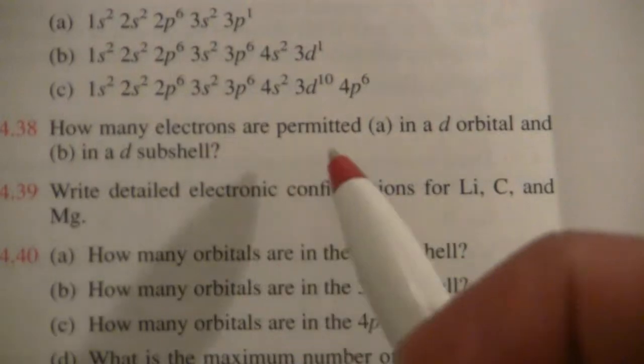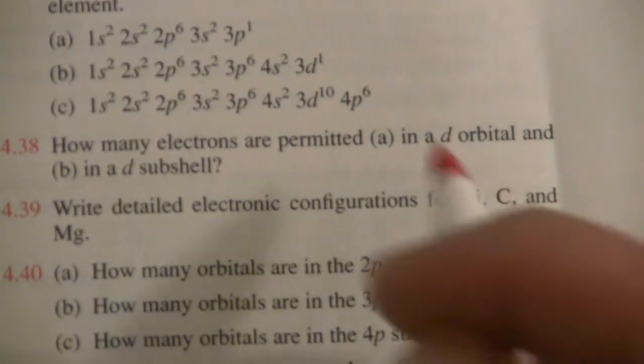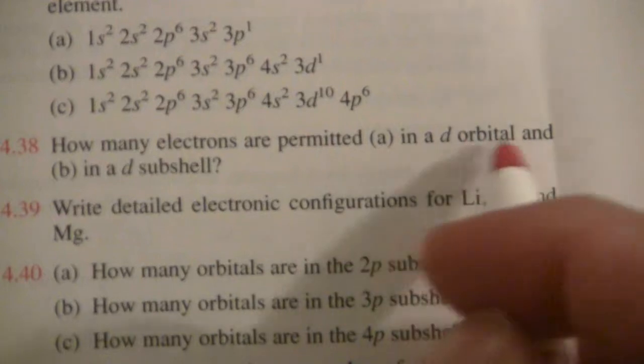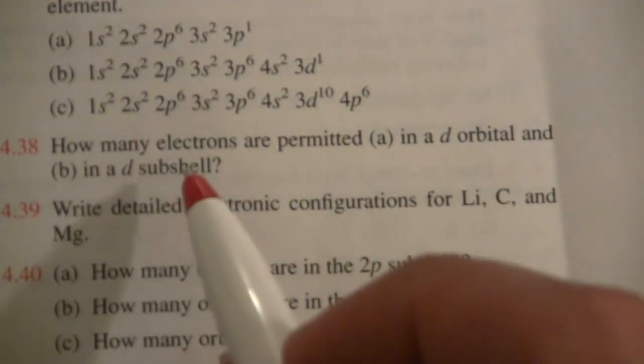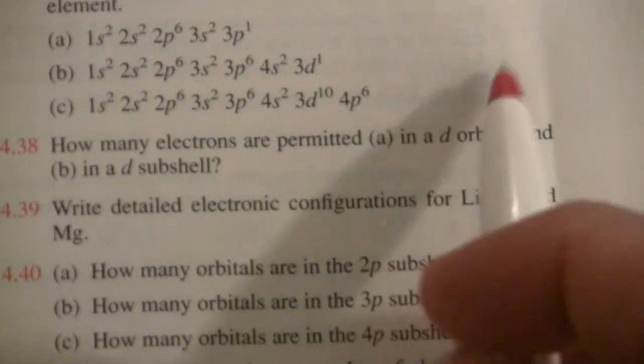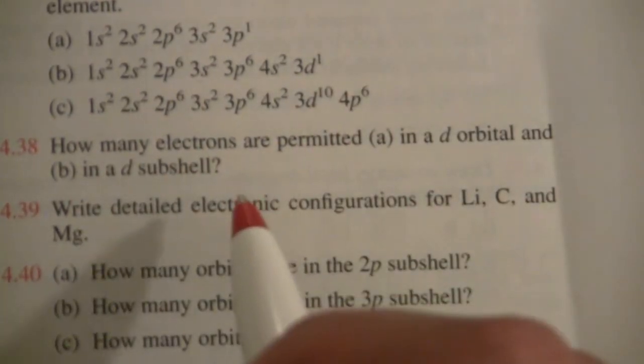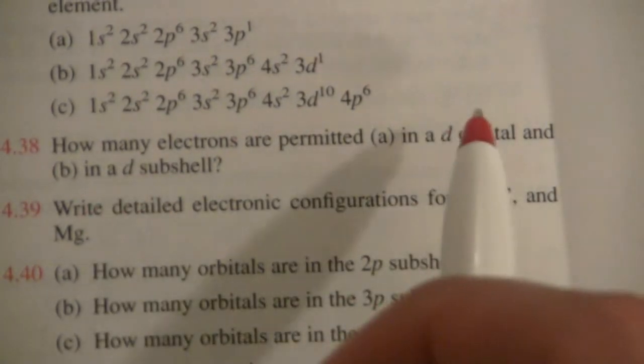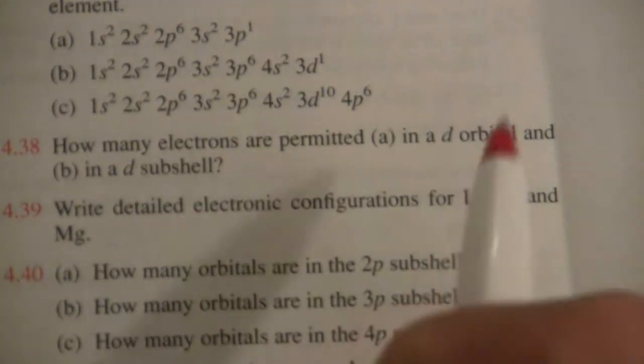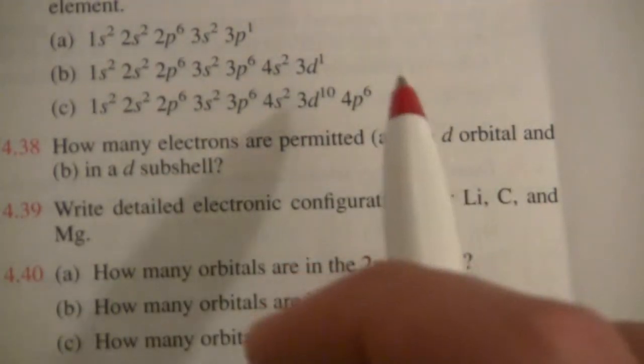Now, here it says, how many electrons are permitted in a D orbital, and in a D subshell? So the orbitals are the individual rooms, if you will. There's only two electrons in each orbital. But in the D subshell, D is when L equals two. There's the zero door at the end of the hall, and then there's two sets of doors. There's a total of five doors in the D wing of the atomic hotel. And therefore, there are a total of ten electrons that may be put in that subshell. Two electrons in each D orbital.